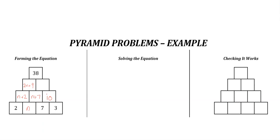a number here which is 38, and that must be made by adding these together. So if we add these together, we've got 2n and an n makes 3n,